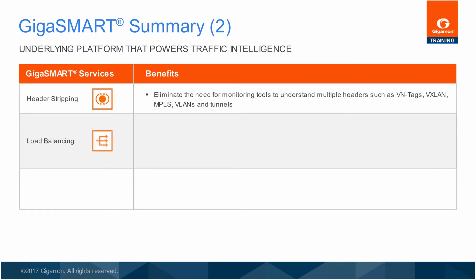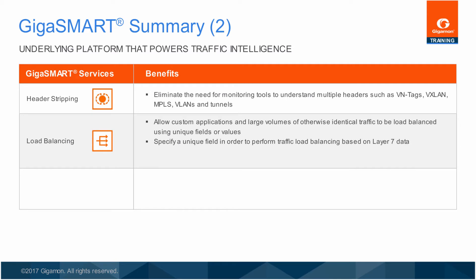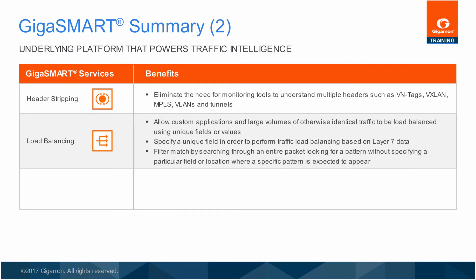Load balancing is included with most GigaSmart features and permits selected traffic to be divided between multiple tools. You can include ports operating at different speeds to accommodate bandwidth differences, or weight delivery of traffic on a per-port basis to accommodate the processing capabilities of the attached tools. GigaSmart can also perform stateful load balancing for GTP tunneled traffic and load balance the sessions from ASF session-based filtering.